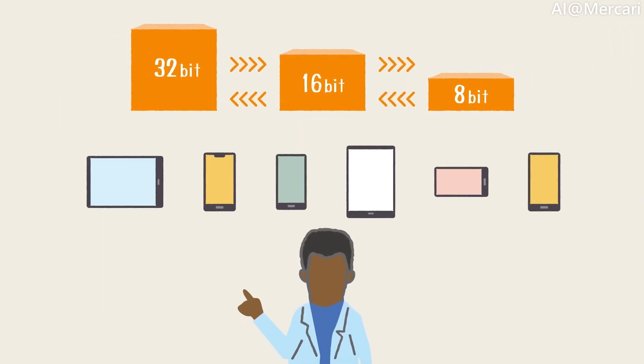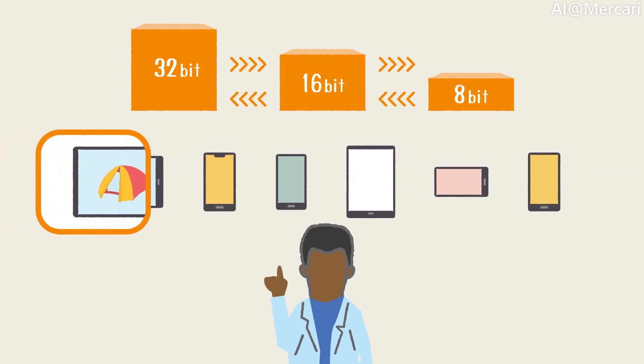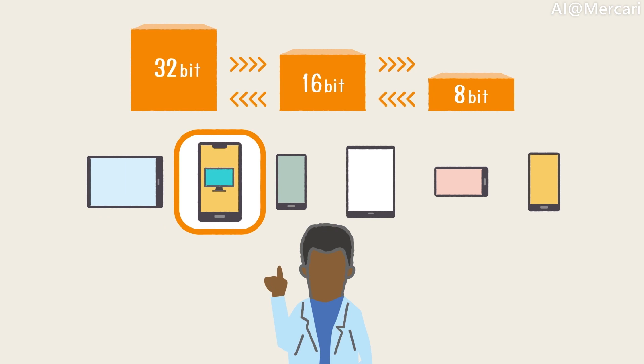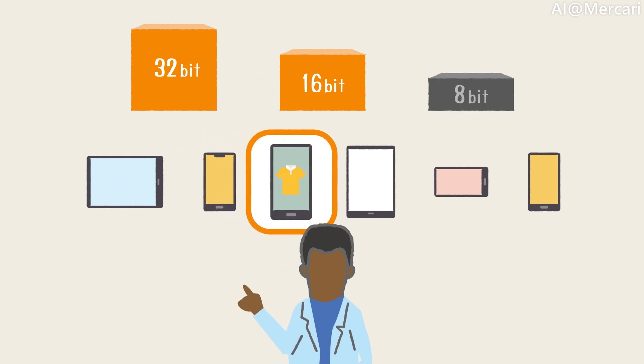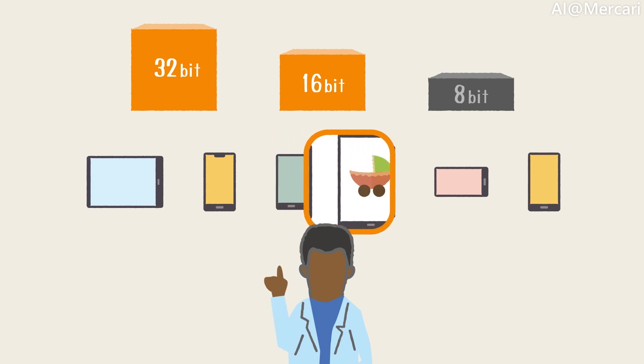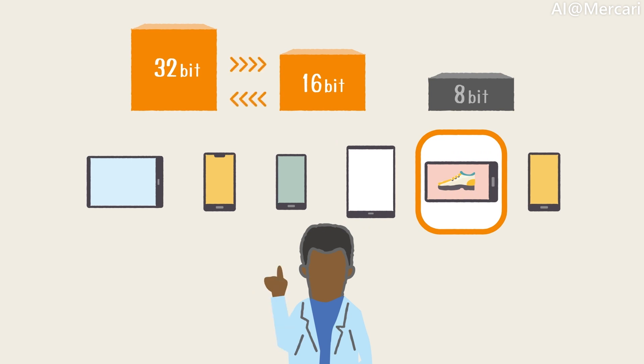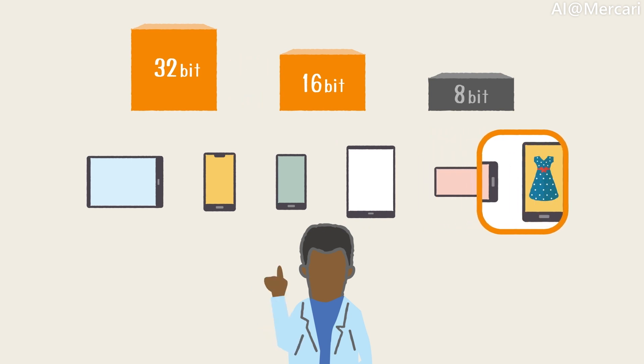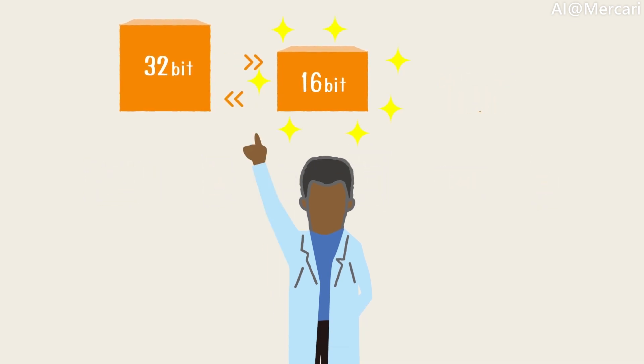The second problem is the compatibility with the devices that the models will be executed on. Recent devices such as smartphones come with powerful GPUs that can be leveraged to process predictions using our models. But some of them have restrictions in the types of data that they can process. Some GPUs can only calculate using 32 or 16-bit floating-point numbers. Therefore, if we quantize our models to 8-bits, we would not be able to leverage the GPUs on the customer's phones. Taking this into account, our purpose is to train our models in 32-bits and quantize them to 16-bit models.